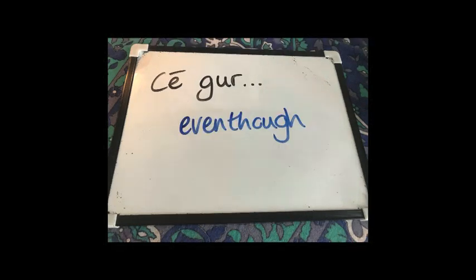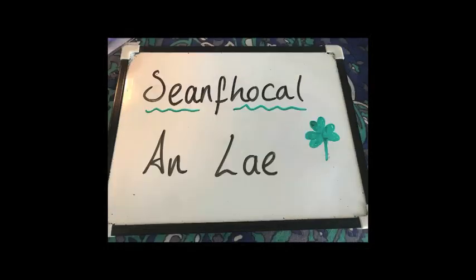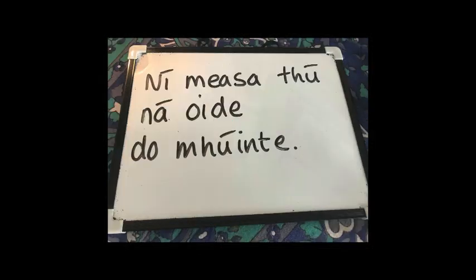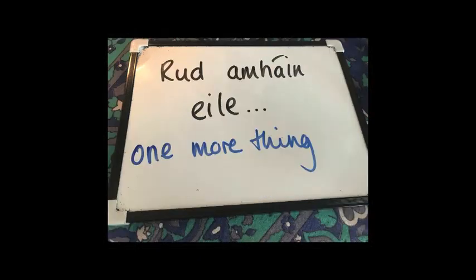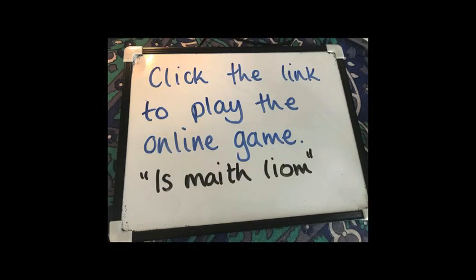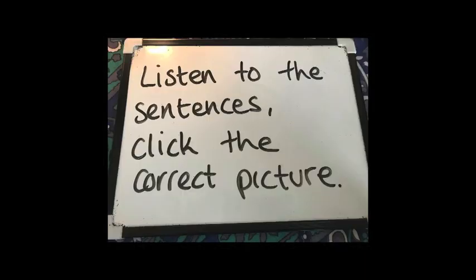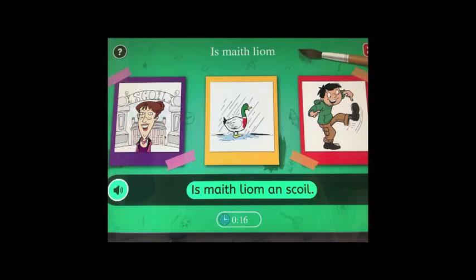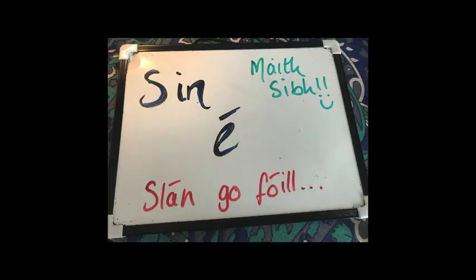Now we'll look at: 'sian agal an lae' — 'sian agal an lae' — ní measa thú ná an t-idéa. Do wunsa. Measa is 'worst', idéa is 'teacher', wunsa is 'manners' — try and work it out. And before we go, one more thing — I've got a game for you and it's called 'cluiche' or 'scigín'. I'm going to post a link into the chat and I want you to click on the game — it's called 'Is maith liom'. You have to match the correct picture to the correct sentence, so for example the sentence might be 'is maith liom an scoil' and you have to find a picture of the scoil and click it. Slán agaibh — that's it. Feicfidh mé sibh an tseachtain seo chugainn. Slán agaibh!